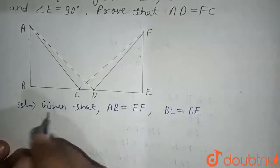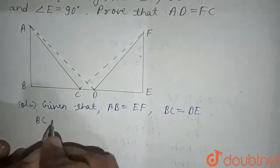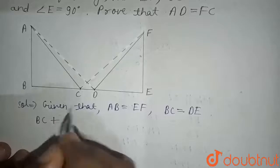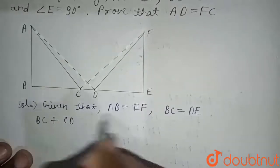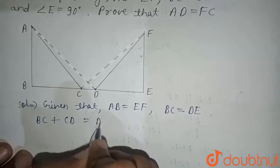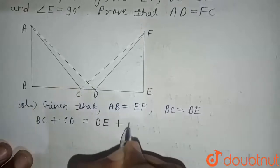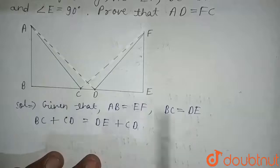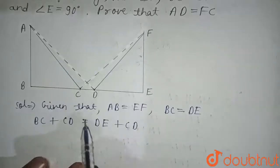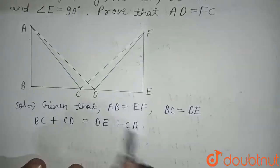Now, if we add BC plus CD to both sides, in this BC equals DE we have added CD to both sides.